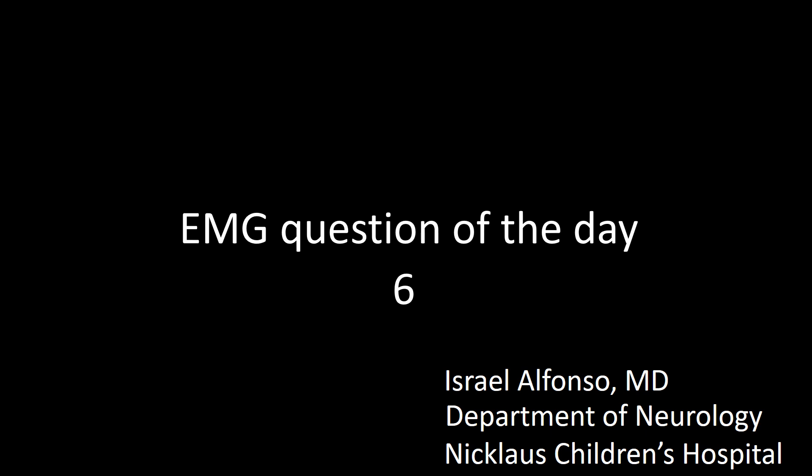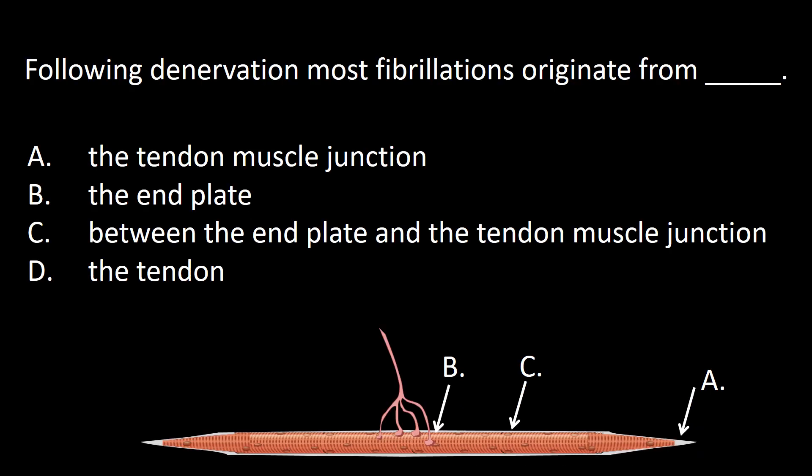EMG question of the day. Following denervation, most fibrillations originate from: A, the tendon-muscle junction; B, the end plate; C, between the end plate and the tendon-muscle junction; D, tendon.